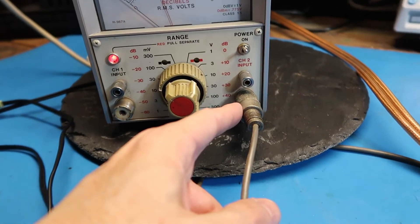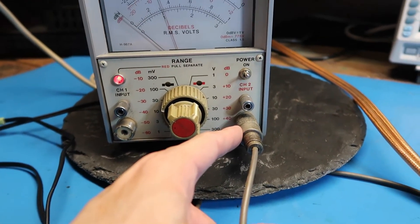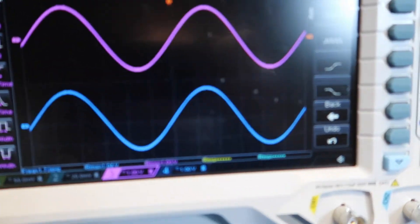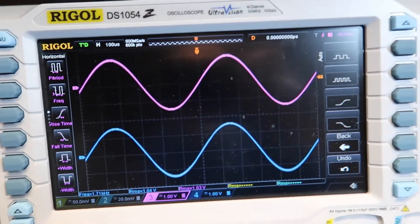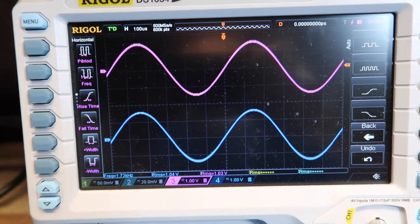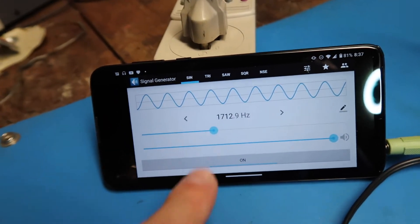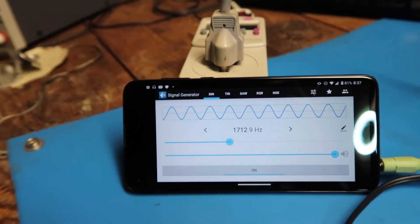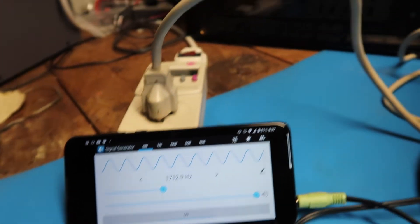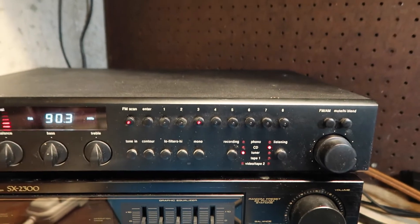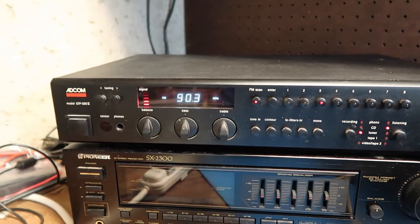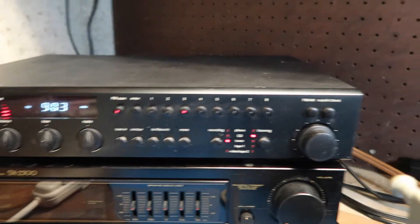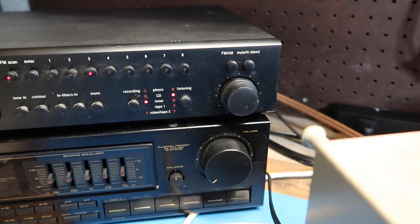So I've hooked up to the channel 2 input. I've got, with the help of the preamplifier, about 1 volt going in. I've adjusted to 1700 hertz. It's just an arbitrary figure. Using this preamplifier. This is an ADCOM preamplifier I've had for many years. At full volume.